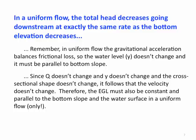Since we're talking about steady flows, q doesn't change going downstream, and y doesn't change, and the cross-sectional shape doesn't change, then it follows that the velocity doesn't change either. Therefore, the EGL must also be parallel to the bottom slope and the water surface in a uniform flow. This is only true in a uniform flow.